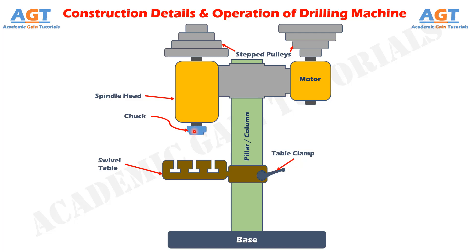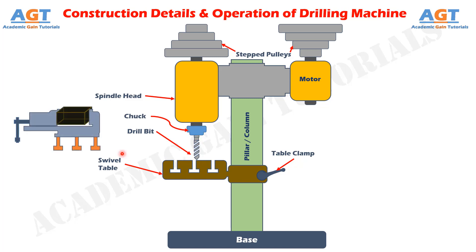The drill chucks are generally self-centering. In a drill machine we use a three-jaw chuck, and it is made of special alloy steel. The drill bit is mounted on the chuck. The drill bit is a multipoint cutting tool used to create a hole in the workpiece, and is used to remove material in the form of holes from the surface of the workpiece while revolving. Using the T-slots on the swivel table, any machine vise or workpiece holding device can be mounted firmly on the table.